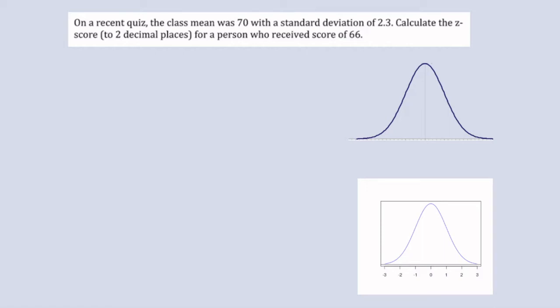In this video we're going to look at finding the z-score. This problem does not say that the student scores were normally distributed, although I've represented them here as normally distributed. We're told that the mean is 70 and that the standard deviation is 2.3.